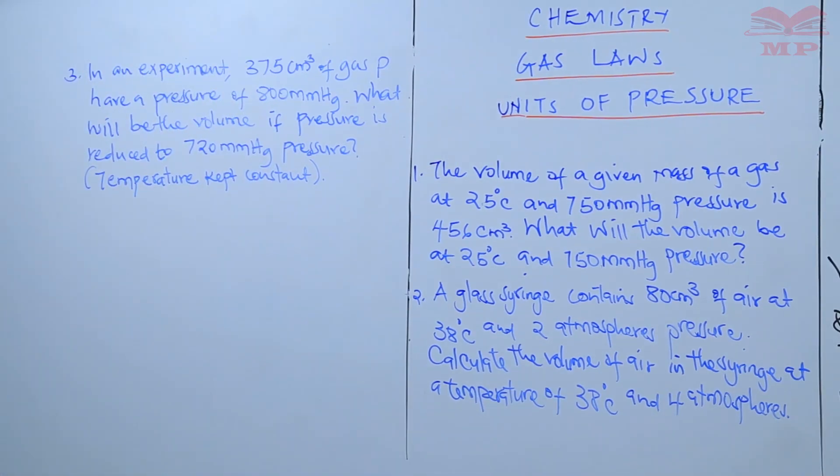In an experiment, 375 cubic centimeters of gas P have a pressure of 800 millimeters of mercury. What will be the volume if pressure is reduced to 720 millimeters of mercury pressure? In brackets: temperature is kept constant.